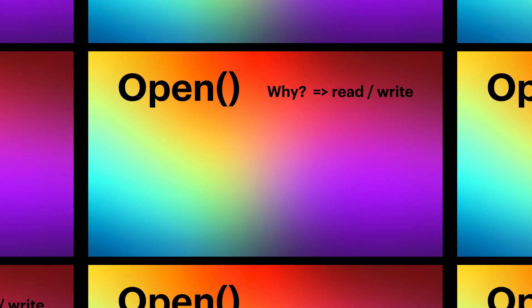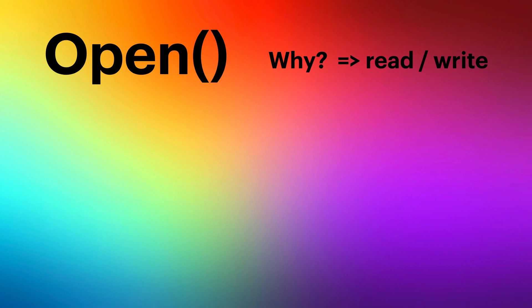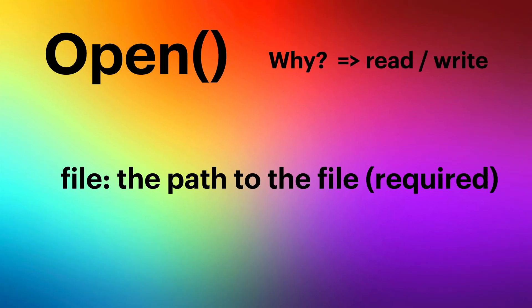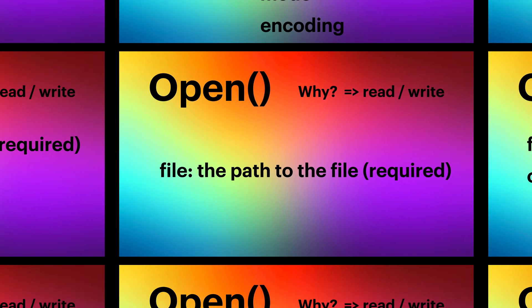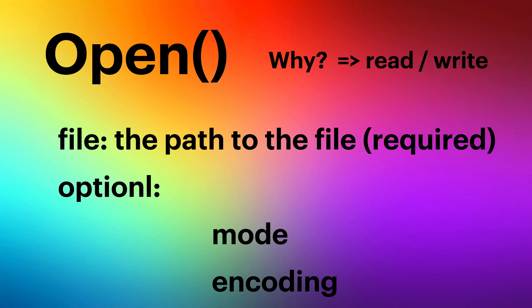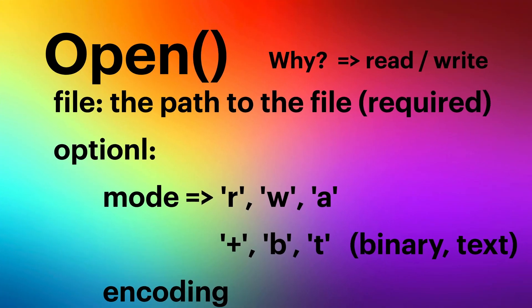Before working with files, we first need to open the file. In Python there is a built-in method called `open()`. Using the `open()` method we can open a file — the main reasons being reading and writing. Inside the `open()` method, there is one mandatory parameter: the file name. Sometimes if the file is not in the same folder, we need to provide the full file path. There are also two optional parameters: mode and encoding.